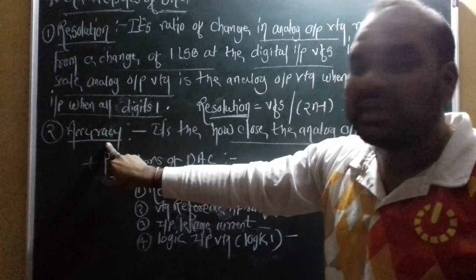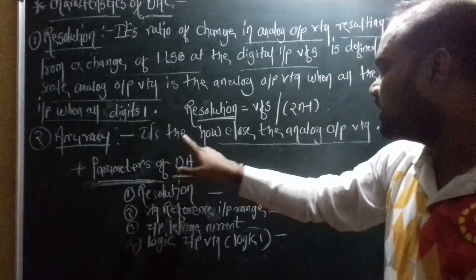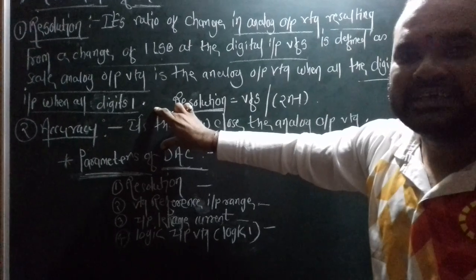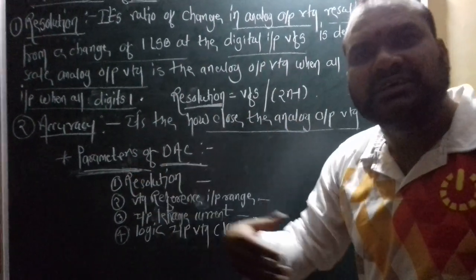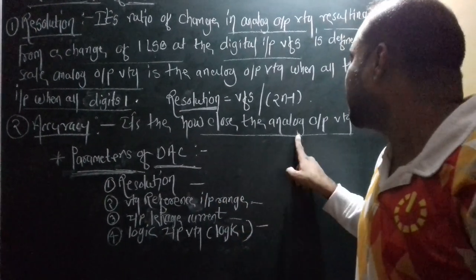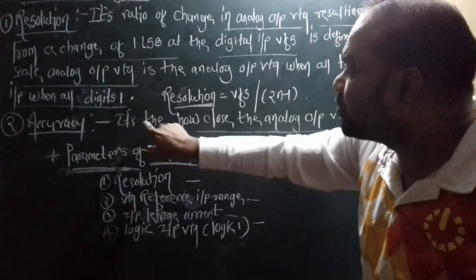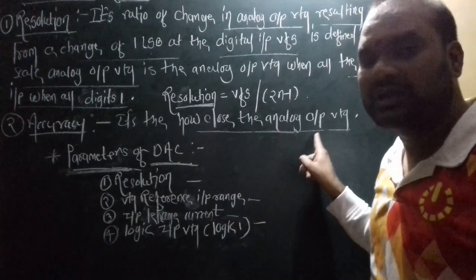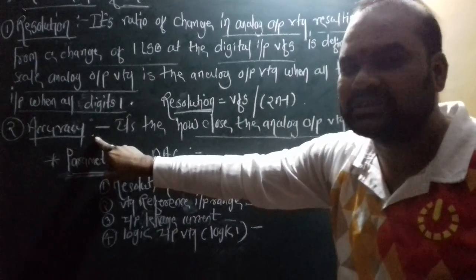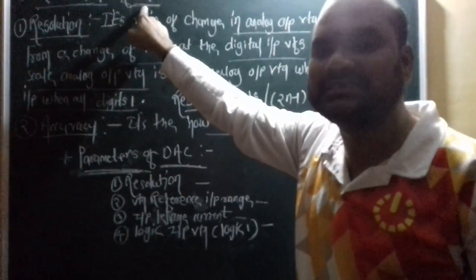Now the next characteristic is accuracy. Accuracy means how close the analog output voltage is to the perfect output voltage — the best, the perfect output voltage. How close the output voltage is. These are the two characteristics, resolution and accuracy, regarding the DAC.